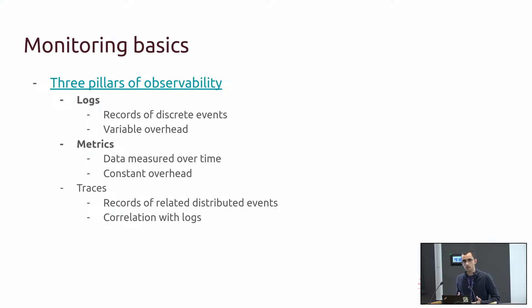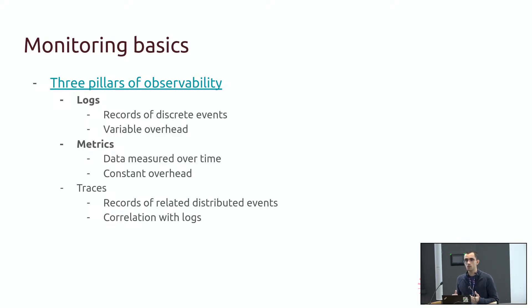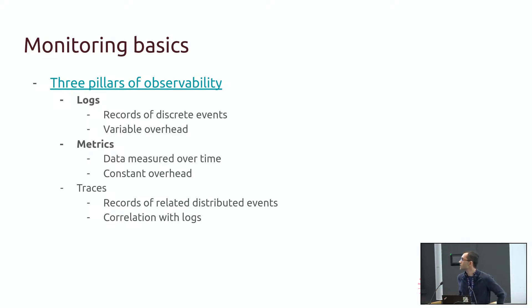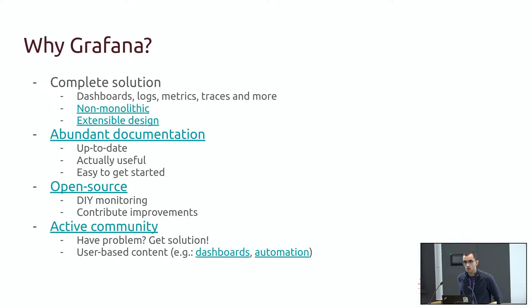Traces are a bit more complicated. They are not a single event but a relation of events. In a complex application with different layers, a trace holds information about each component and shows the relation between them — most useful for correlating with logs. This is slightly out of scope for this presentation, so we'll be focusing on logs and metrics.